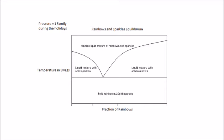The x-axis represents the fraction of rainbows. The y-axis represents temperature and swags. Phase diagrams must be drawn at constant pressure or constant temperature. This one has constant pressure measured in... Who chose these units of pressure? That was me. Happy Holidays.